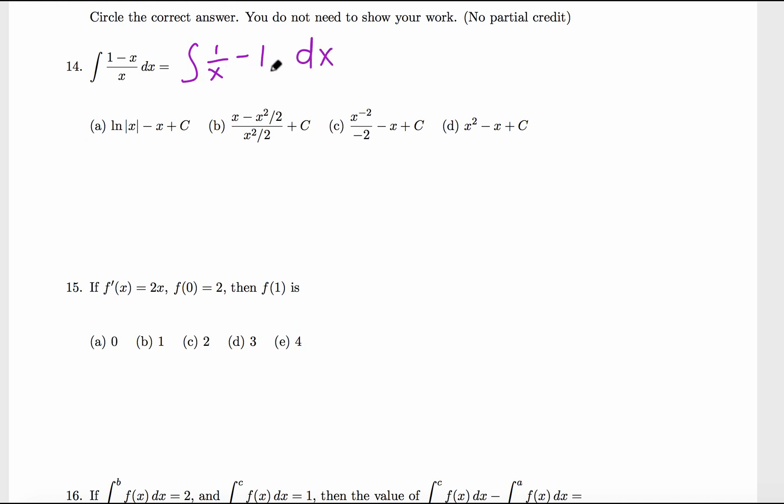Now we got two terms. The anti-derivative of 1/x is natural log of x because the derivative of natural log of x is 1/x. Anti-derivative of 1 is just x, and plus c is always there. So answer A.